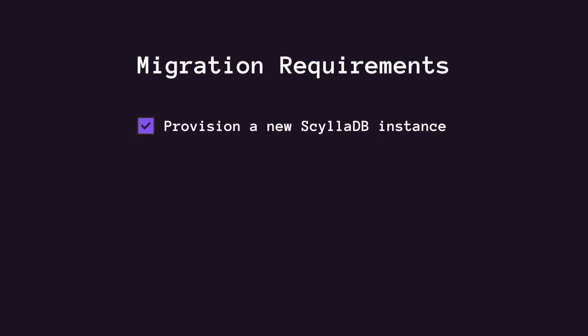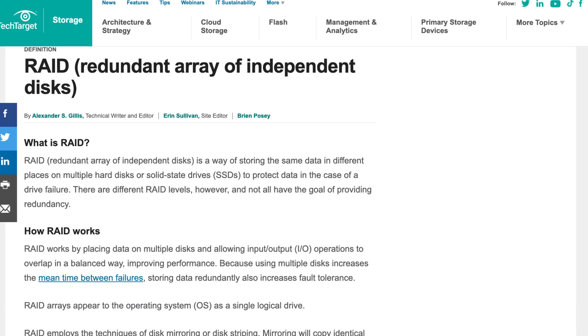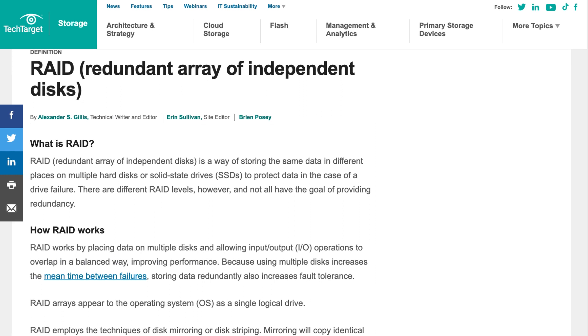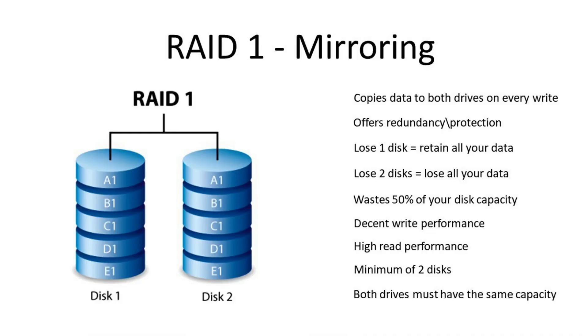So the migration to ScyllaDB was inevitable. The requirements were straightforward: move all the data with no downtime. Step one was to provision a new ScyllaDB instance, using local SSDs for speed and leveraging RAID — Redundant Array of Independent Disks — to mirror data to a persistent disk for durability. RAID mirroring duplicates data across multiple disks so that if one disk fails, the data is still accessible. They started migrating incoming new data to ScyllaDB first, then migrated the old data slowly, step by step — though the progress got stuck at 99% before finally working out.